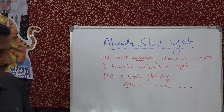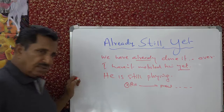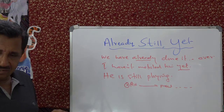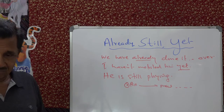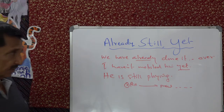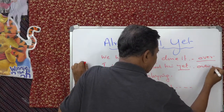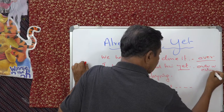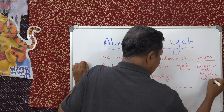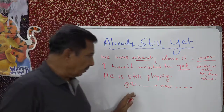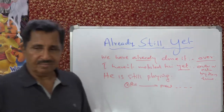In questions and negative sentences, 'yet' asks whether the action is over or not by this time. 'Already' means action over by this time. 'Yet' means not over — the action has not taken place. 'Still' means started in the past, continues in the present, and will continue for some more time.